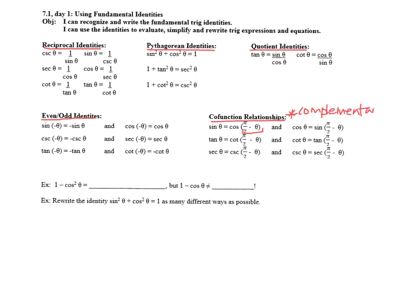Complementary meaning adding up to 90 or pi over 2 radians. I think in the first chapter we had them as 90 minus theta. Now they keep them as pi over 2 minus theta, which means the same thing.